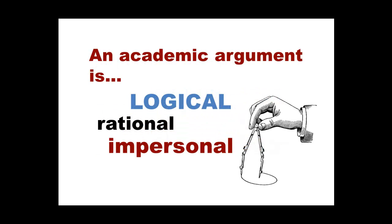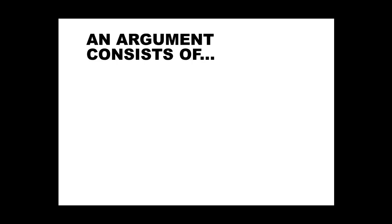An academic argument should always be three things: firstly, logical and based on good reasoning; secondly, rational, so evidence is observable and verifiable; and thirdly, impersonal, based on evidence and not on personal feeling. An academic argument should be reasonable, meaning it is not biased or based only on persuasion, but is clear, considered, and incorporates appropriate research.